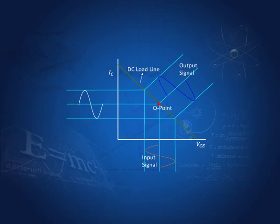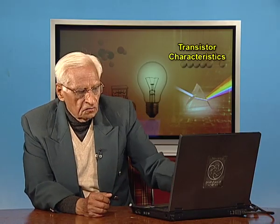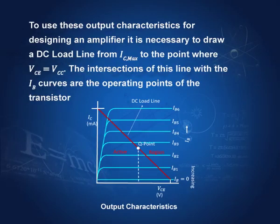The Q point is chosen in the middle so that the input signal is not distorted. Suppose the operating point had been chosen at one extreme — this part of the signal will be all right, but this part would be chopped off, disturbing the input signal. Similarly, if the Q point is at the other extreme, one part is fine but the other part gets cut off, affecting the output signal. If the Q point is in the middle, both input and output signals are in proper shape and are not disturbed.